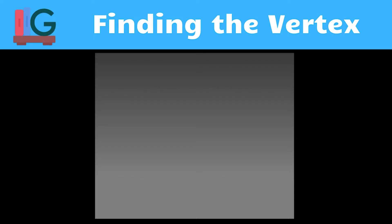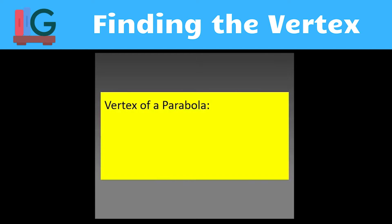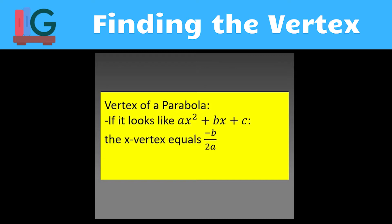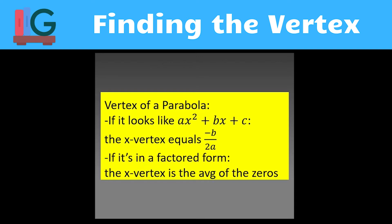We're referring to the vertex of a parabola. The background information you need is that if your parabola is in the ax squared plus bx plus c format — which is the fundamental format of a parabola — then the x value of the vertex is negative b over 2a, using those two coefficients placed in that arrangement.